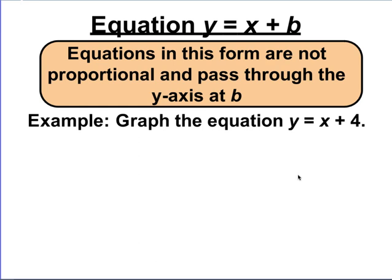We have one more equation to look at today: y equals x plus b. B stands for the y-intercept — the location on the graph where the line passes through the y-axis. So the equation y equals x plus 4 should pass through the y-axis at positive 4, and we're going to see if it does. There is no m here, but remember, if there is no coefficient next to a variable we assume it is 1. So the slope of the line should be 1.